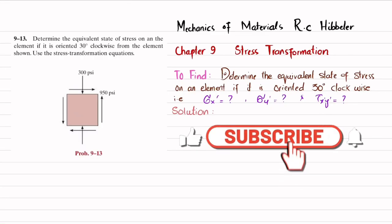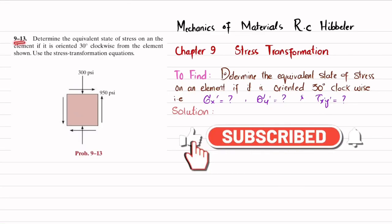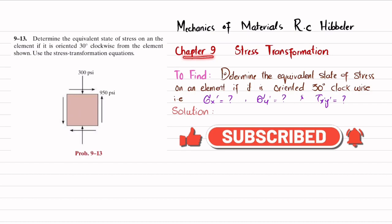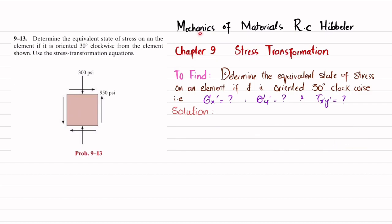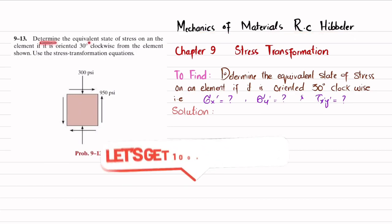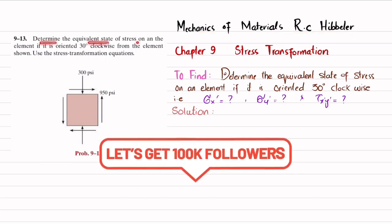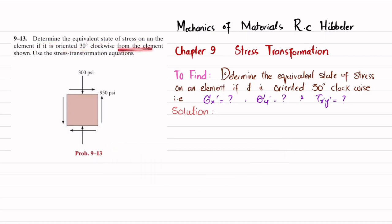Welcome back. Problem 9-13. This problem is taken from chapter number 9, that is stress transformation, and the book name is Mechanics of Materials by R.C. Hibbeler. The statement is: determine the equivalent state of stress on the element if it is oriented 30 degrees clockwise from the element shown.